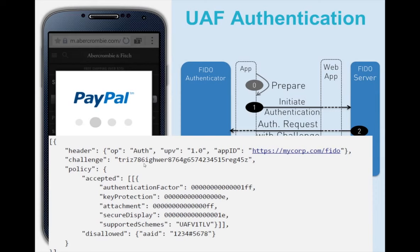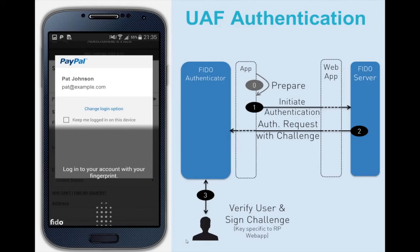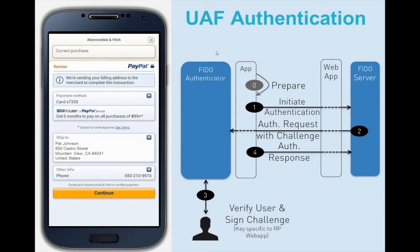The PayPal application receives the authentication request, which has a header, contains a challenge, and a policy — essentially accepting all authenticators, authentication factors including fingerprints and face recognition, various key protection methods whether embedded or external, and with or without a secure display. One specific authenticator model is explicitly disallowed. Once the Authenticator receives the request, it wants to verify the user — it displays a FIDO logo and dots pointing to the fingerprint sensor at the home button. When you swipe your finger, the Authenticator verifies the user, signs the challenge, and generates the authentication response.